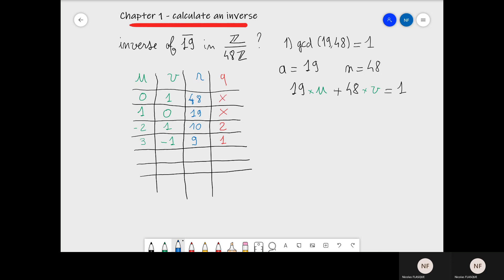Here, let's go for another line. 10 divided by 9, the quotient is 1. 10 minus 9 is 1. Minus 2 minus 1 times 3 is minus 2 minus 3, which is minus 5. 1 minus 1 times minus 1 is 1 plus 1, which is 2.